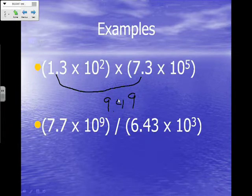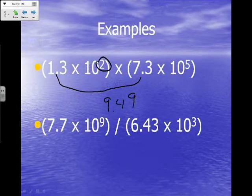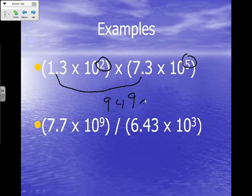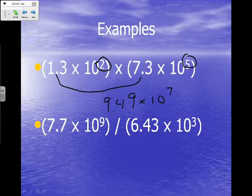The first example is 1.3 times 10 squared times 7.3 times 10 to the fifth. First, multiply the numbers in your calculator: 1.3 times 7.3 gives you 9.49. Then, since we're multiplying, we add the powers of 10. The powers of 10 are 2 and 5, so 5 plus 2 equals 7 — that gives us our new power of 10. So your answer should be 9.49 times 10 to the seventh.